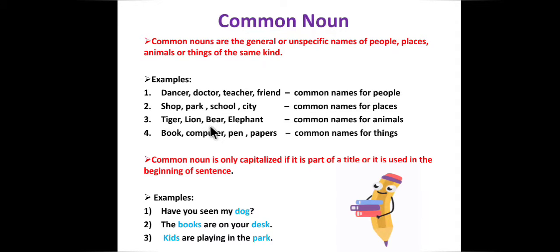Tiger, lion, bear, elephant — all these are common names for animals. Book, computer, pen, papers — common names for things. All these examples are common nouns. We have used unspecific or general names for these people, places, animals, or things. We have not specifically pointed out to something or someone.